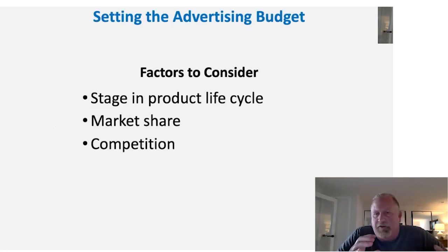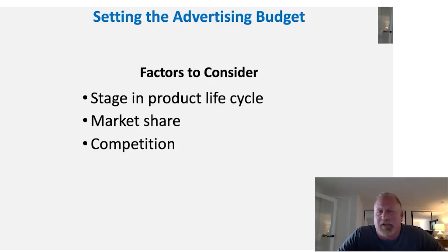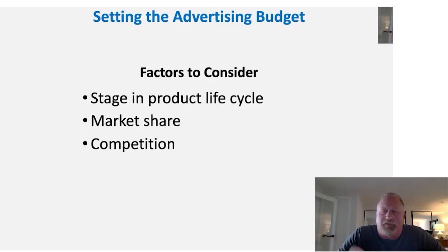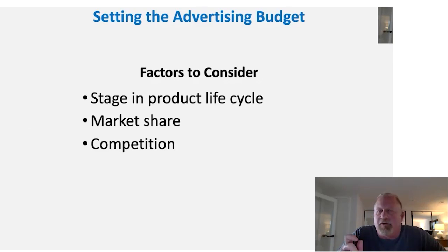When we think about advertising, there are three factors to consider when thinking about budget and selection of ads. The first is the stage in the product life cycle, which we've talked about in previous classes — from the entry stage all the way to the maturity stage. Where a product stands in the life cycle is very important because it helps us select the type of advertising and the amount we want to spend. A very mature product would have a different spend and style than a brand new product we're trying to introduce.